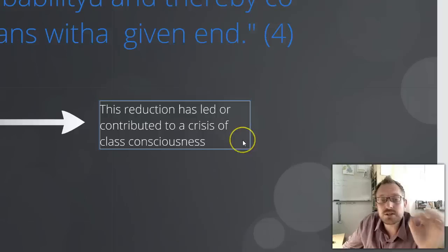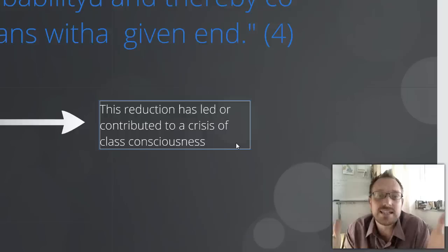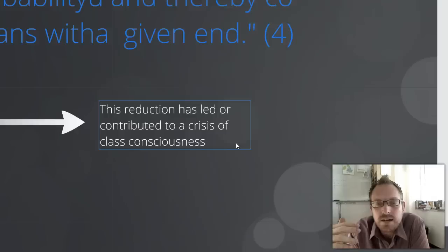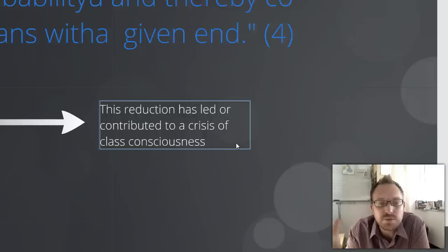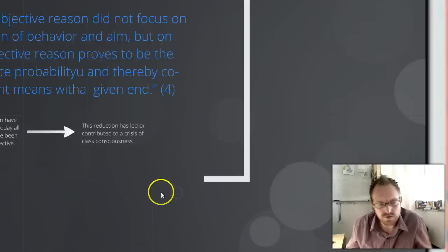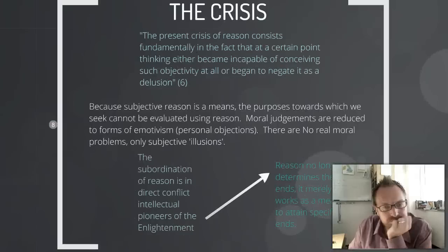This reduction has contributed to the crisis of class consciousness, and that's what the Eclipse of Reason and the Dialectic of Enlightenment are trying to articulate — the idea that the inability for people to awaken to the commodification of each other, using the Marxist vernacular, is related to actually a much deeper story. It's not simply because we need more slogans and more pamphlets. The problem of emancipation is ultimately seeded in a problem of consciousness, which is dependent upon this idea of subjective reasoning.